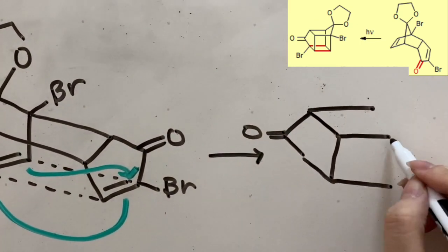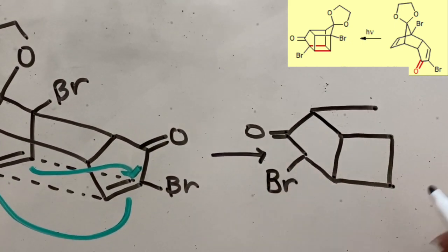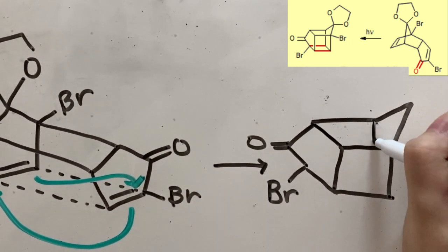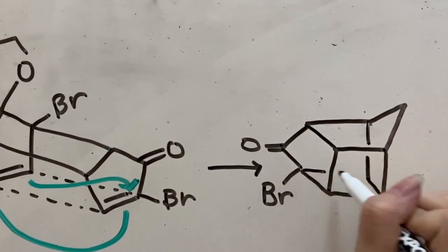And once we rotate this product and redraw it, it will look like the final product of this photocyclo addition and start to resemble a cube.